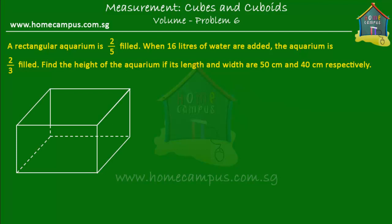Here is the rectangular aquarium we're talking about. The length is 50 centimeters and the width is 40 centimeters. We have to find the height of the aquarium, which is the unknown — marked here as a question mark.